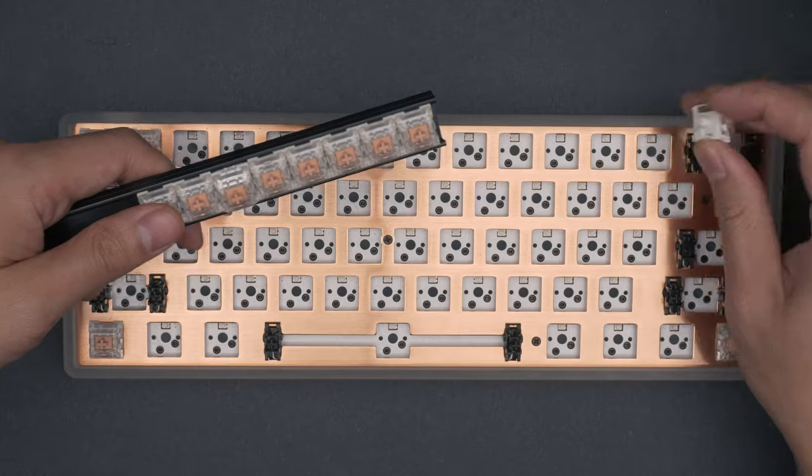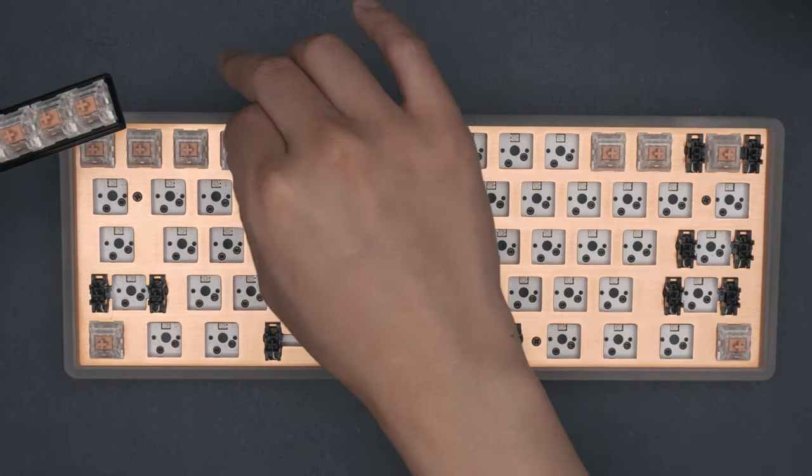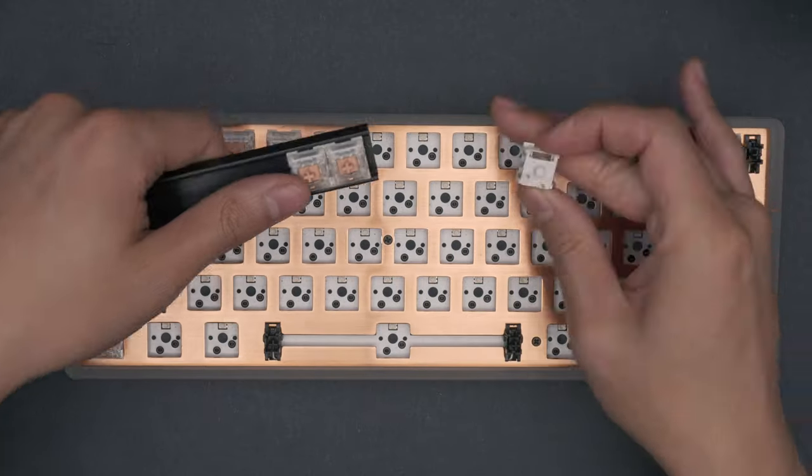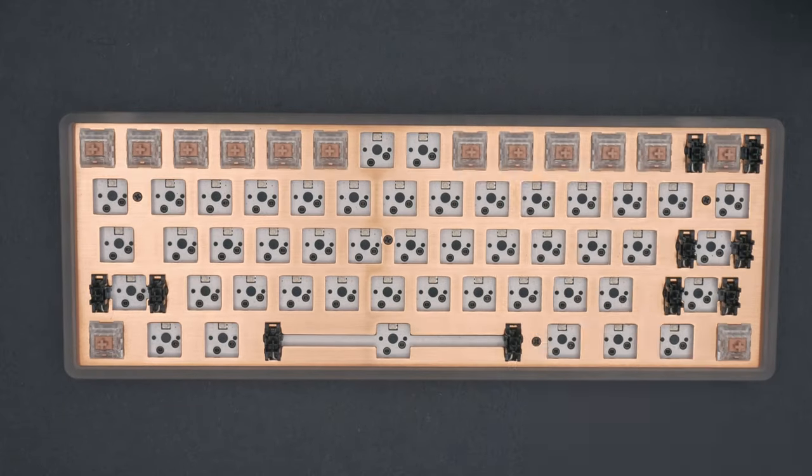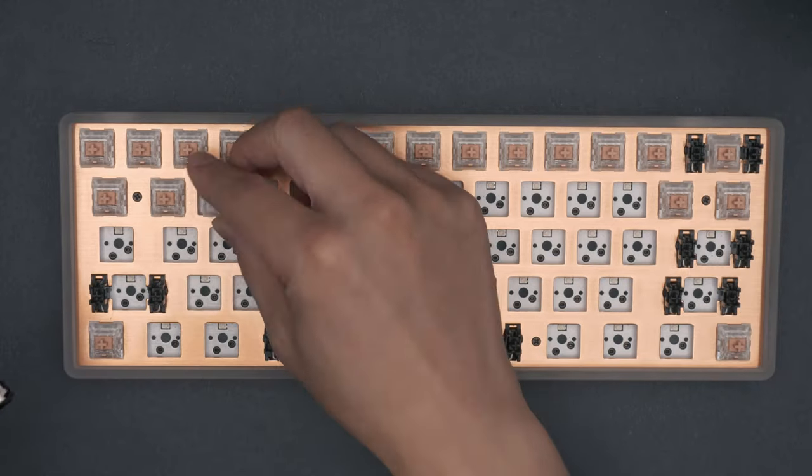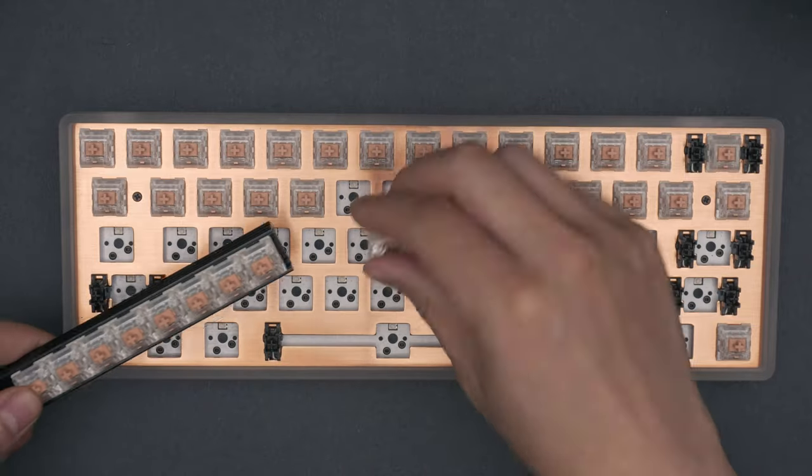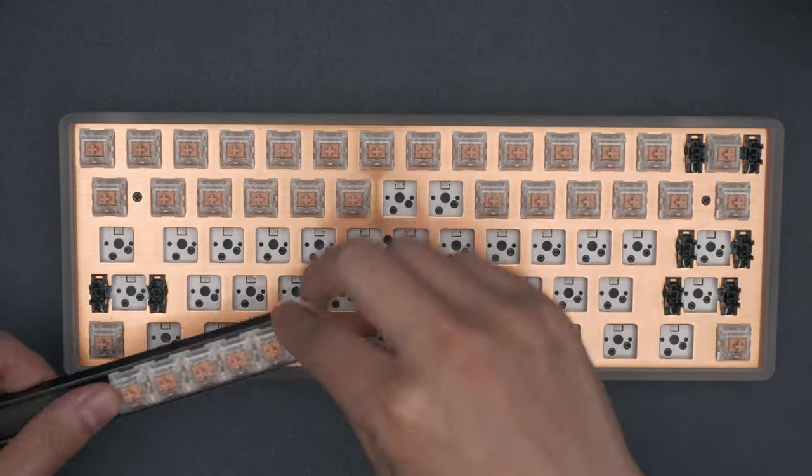The Karina requires a special installation method to avoid damaging your switches. You'll need to install from the outside to the middle for each row, alternating from side to side. It's especially important for the number row, but it's best to do the same for all rows. Otherwise, if you start in the middle, the plate has a lot of flex. Your switch may not go in straight and bend the pins.